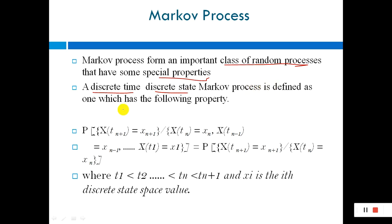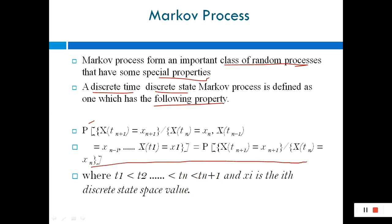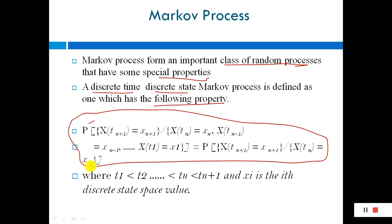Markov process is defined as one which has the following property. It falls in the class of random process which has a special property. This is the probability equation used to define the property of the Markov process. We are at t1 less than t2, where x_i is the i-th discrete state space value. This equation tells about the specialty of the Markov process.